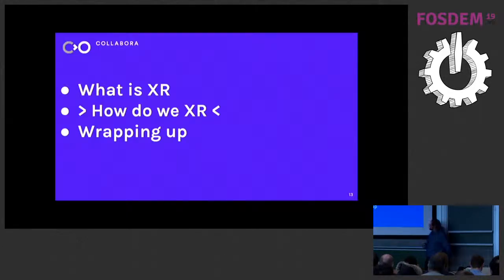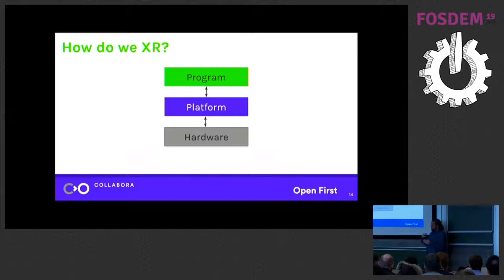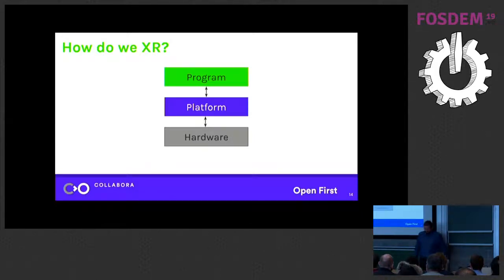Moving on to how we do XR, especially in open source. Looking at it simply: you have your programs — your application, your games — things that are actually shown to the user. You have your platforms, and to draw a parallel with graphics, this is your X, your Mesa, all that you're operating on in Linux. And then there's hardware, which I'm kind of glossing over right now.